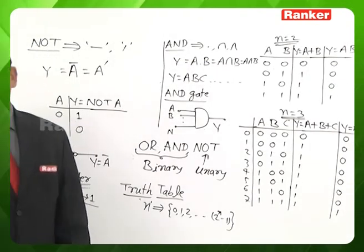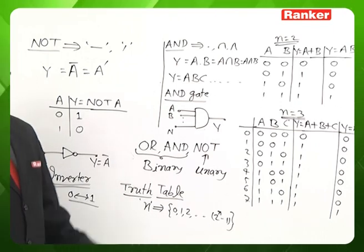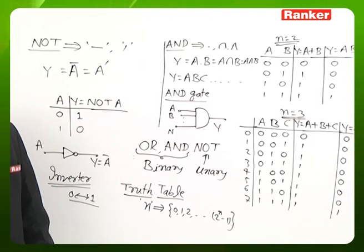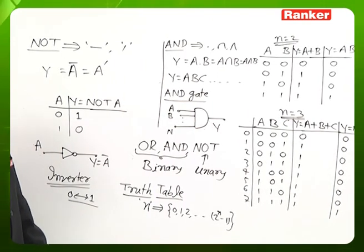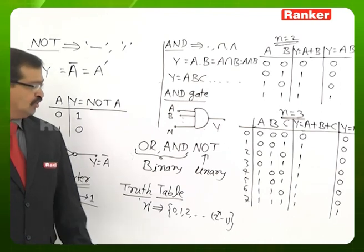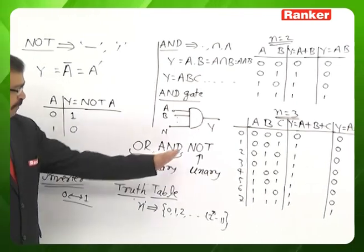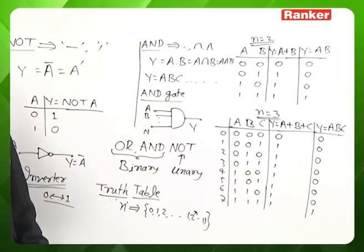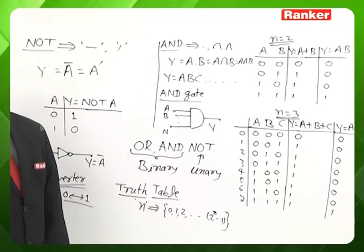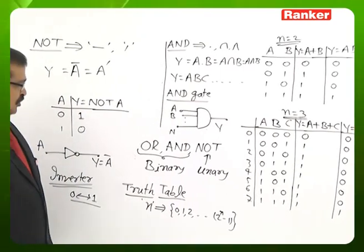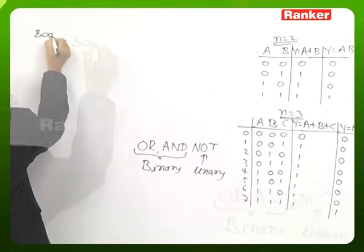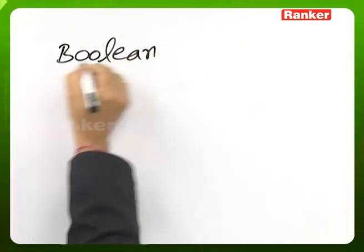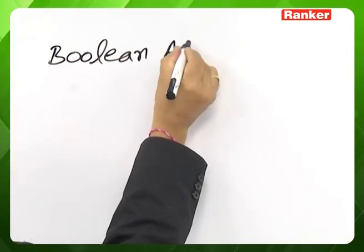In any mathematical subject, standard relations that are used very frequently are named properties. Similarly, in Boolean Algebra, we can list several properties on these operators, which we call Boolean Algebra properties.